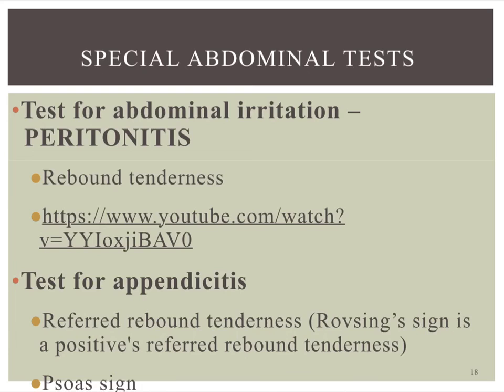The psoas sign involves having the patient lay on their side and hyperextend their right leg back; you push against their thigh as they try to bring it to midline, causing pain and discomfort. The obturator sign involves flexing the patient's right knee and rotating the hip in and out, which will also cause pain. For both the psoas and obturator signs, we only test the right leg because it's closely related to the location of the appendix.